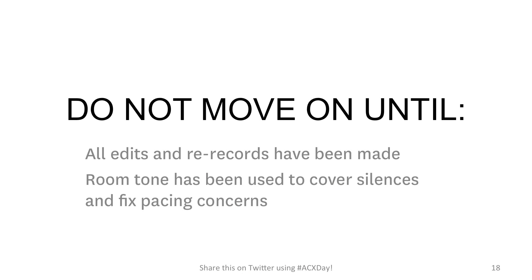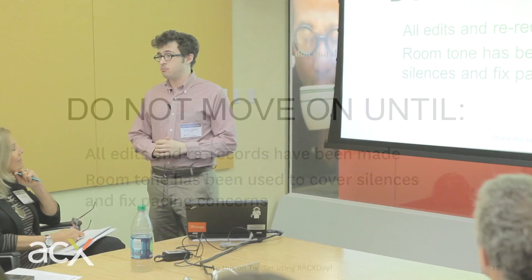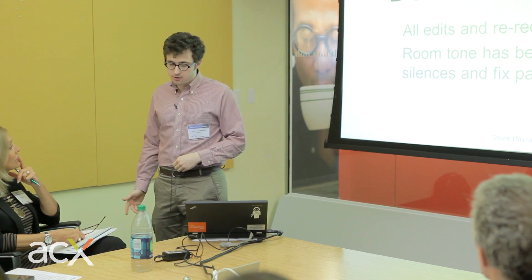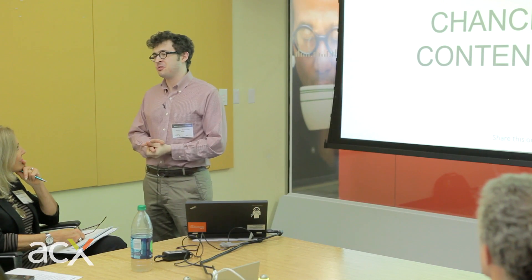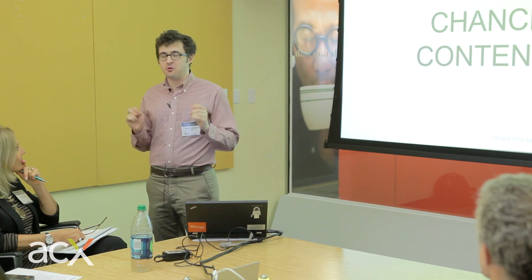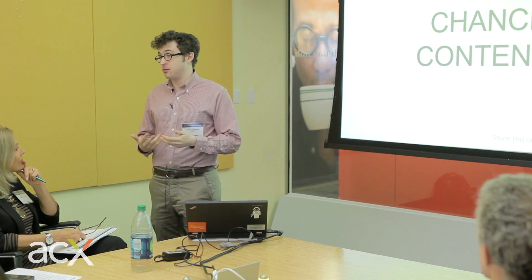When you're doing your editing, don't move on to the mastering step until you've made sure all your edits and rerecords have been made and inserted into the audio file, and that your room tone has been used to cover all the silences created by fixing your pacing and removing sounds. This is the absolute last chance you have to make any changes to your content. Once you go to the mastering portion of audiobook production, you should have a fully finished audiobook ready to get mastered, leveled, and sent out.